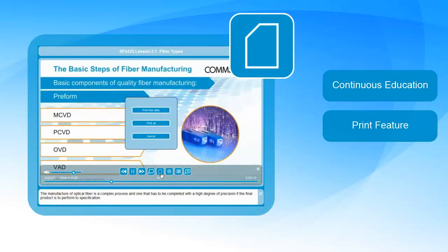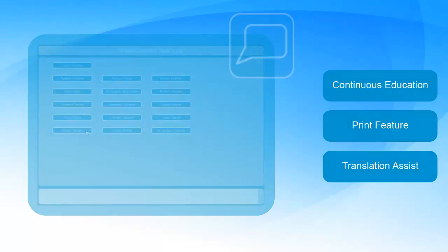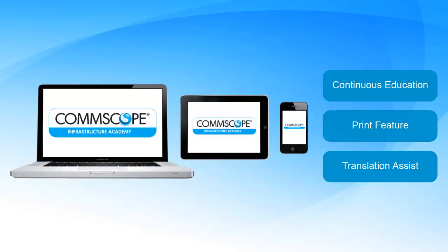Should you wish to print sections for reference, this can be done by using the print function in the webcast player. Our material is also translated, so if you'd prefer to view subtitles or training in one of the many languages, then you can by selecting a language in the webcast player. Finally, the training is available on whatever viewing device you prefer, whether at your desk on a PC, or on the go on your tablet or smartphone.